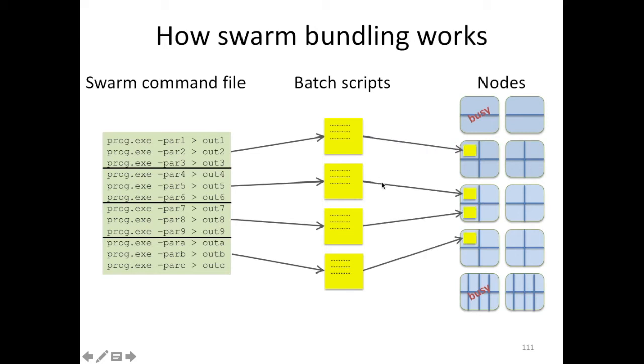The batch system would then allocate these batch jobs on the cluster, and each of the commands in the original file would run sequentially, one after another, on the allocated resources.